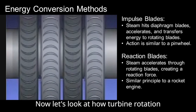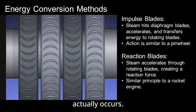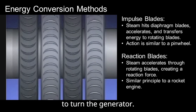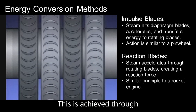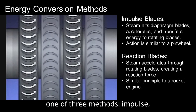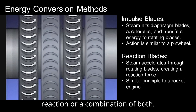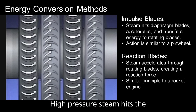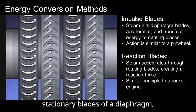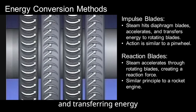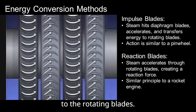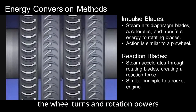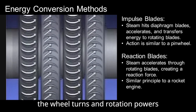Now let's look at how turbine rotation actually occurs. The turbine's job is to convert steam energy into mechanical energy to turn the generator. This is achieved through one of three methods: impulse, reaction, or a combination of both. High pressure steam hits the stationary blades of a diaphragm, speeding up the flow and transferring energy to the rotating blades. As the steam strikes the blade, the wheel turns and the rotation powers the turbine shaft.